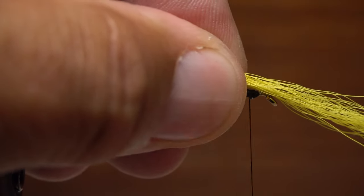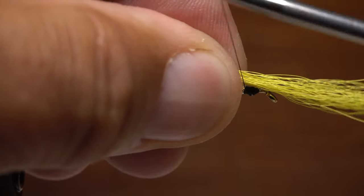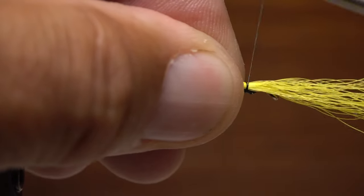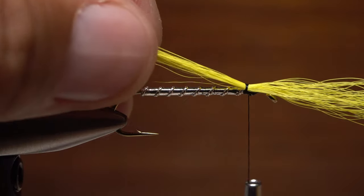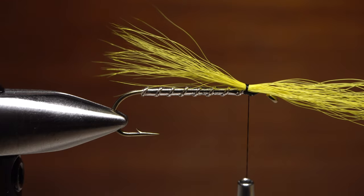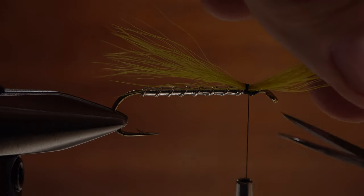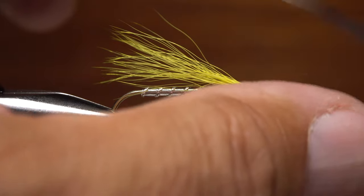Then cord up your tying thread by spinning your bobbin clockwise. The corded thread will be stronger and bite into the somewhat slippery bucktail better than flattened thread. Once secured, lift the butt ends up and snip them off at a shallow angle.